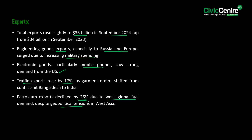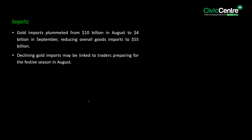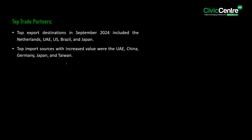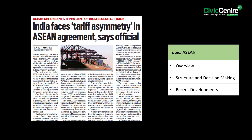On the imports side, gold imports plummeted from $10 billion in August to $4 billion in September, reducing overall gold imports to $55 billion. The decline in gold imports may be linked to traders having prepared for the festive season in August. Top export destinations in September 2024 included the Netherlands, UAE, US, Brazil, and Japan. Top import sources with increased value were UAE, China, Germany, Japan, and Taiwan.